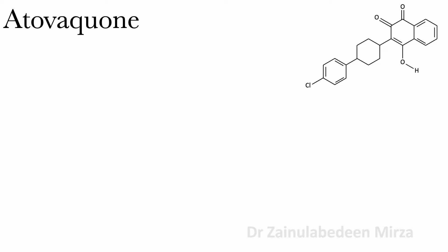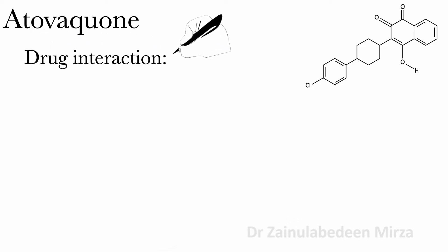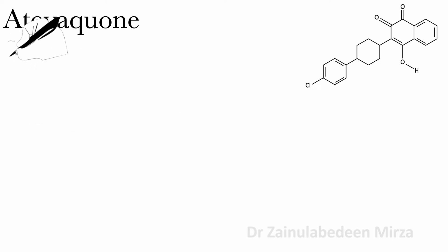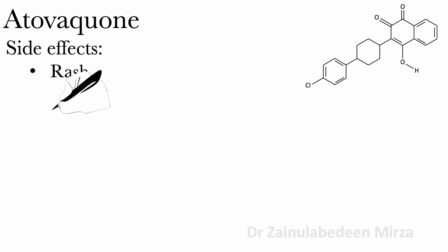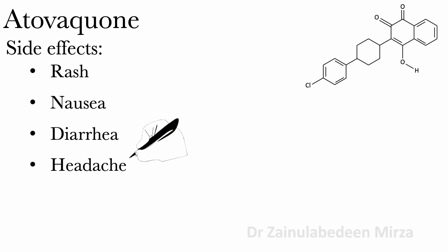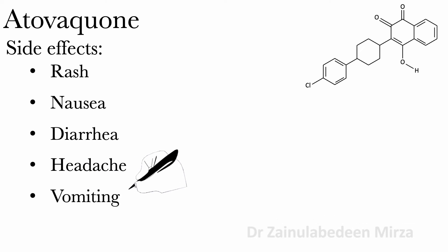Atovaquone is used to treat Pneumocystis carinii pneumonia. Drugs such as rifampin and rifapentine may decrease atovaquone blood concentration and increase rifampin blood concentration. Side effects of atovaquone include rash, nausea, diarrhea, headache, vomiting, and fever.